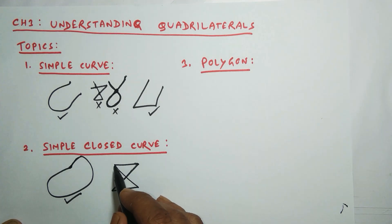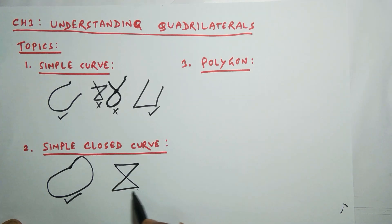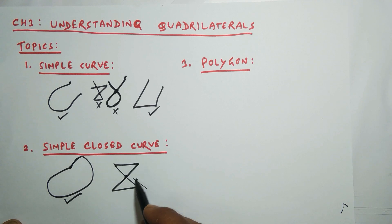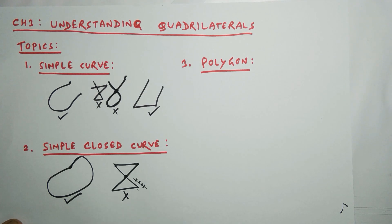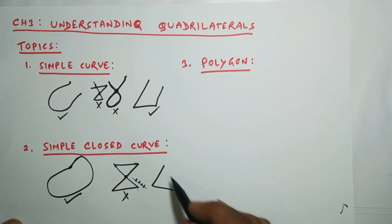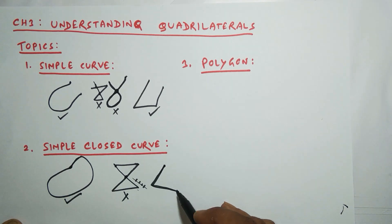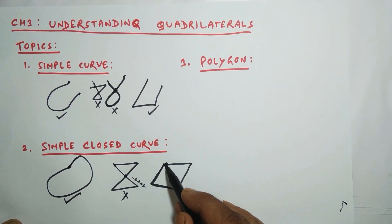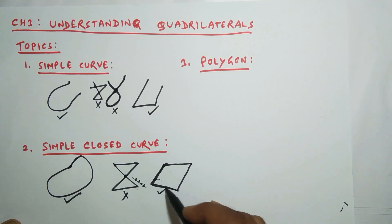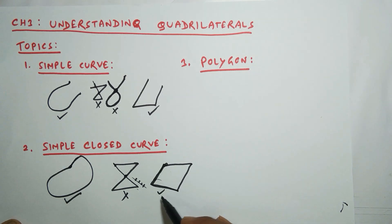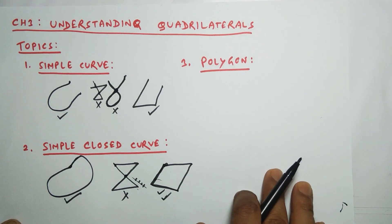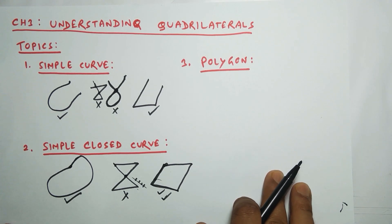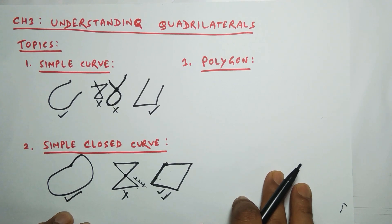To be a simple closed curve it should be closed as well as simple — it should not intersect. Look at this closed curve: it has a starting point and an end point that meet, so it is closed, but it has intersected at one point, so this is not a simple closed curve. Another example: this curve is closed and nowhere intersected, so this is a simple closed curve.